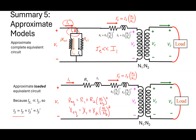By KCL: I1 equals I-sub-e plus I2-prime. Because the magnetizing and core impedances are much bigger than the leakage impedances, once I'm in a loaded condition, I-sub-e is much much smaller than I1. In general I-sub-e is really small. That's why I want to take you to the lab — so you can actually see that. When the transformer is unloaded, I measure I-sub-e, and those currents are really tiny.